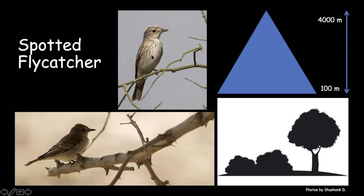One thing to note about the spotted flycatcher is that the stance changes depending on where the bird sits — on a thicker branch it appears more horizontal, while on a thinner branch it is much more upright. This is one of the very few flycatchers where stance can be contrasting. When it passes through India, it is mostly in northwest India in low-elevation areas like the Desert National Park or Kutch in dry habitat.